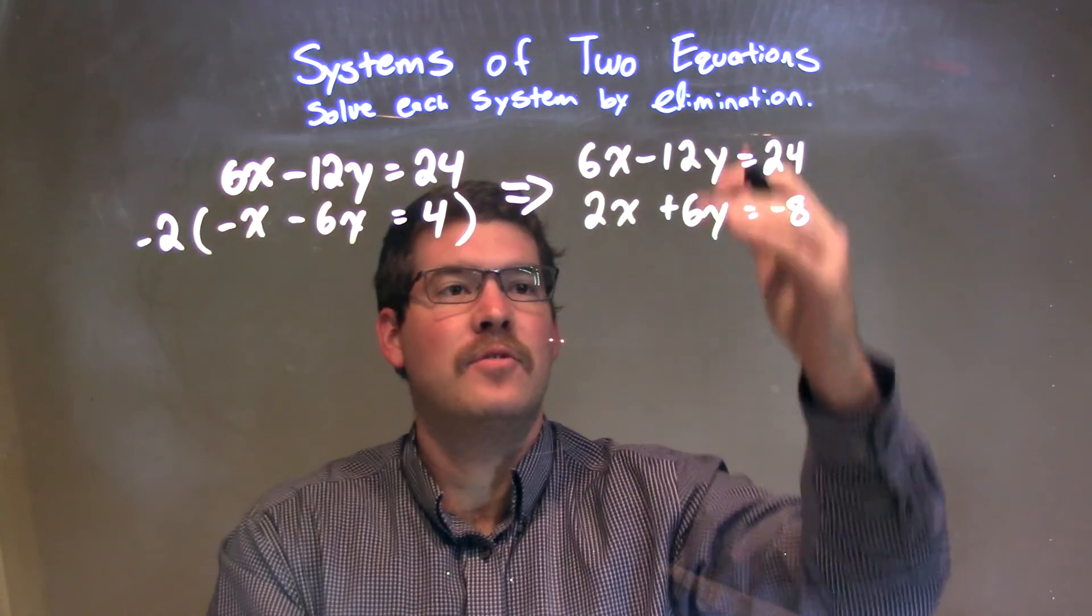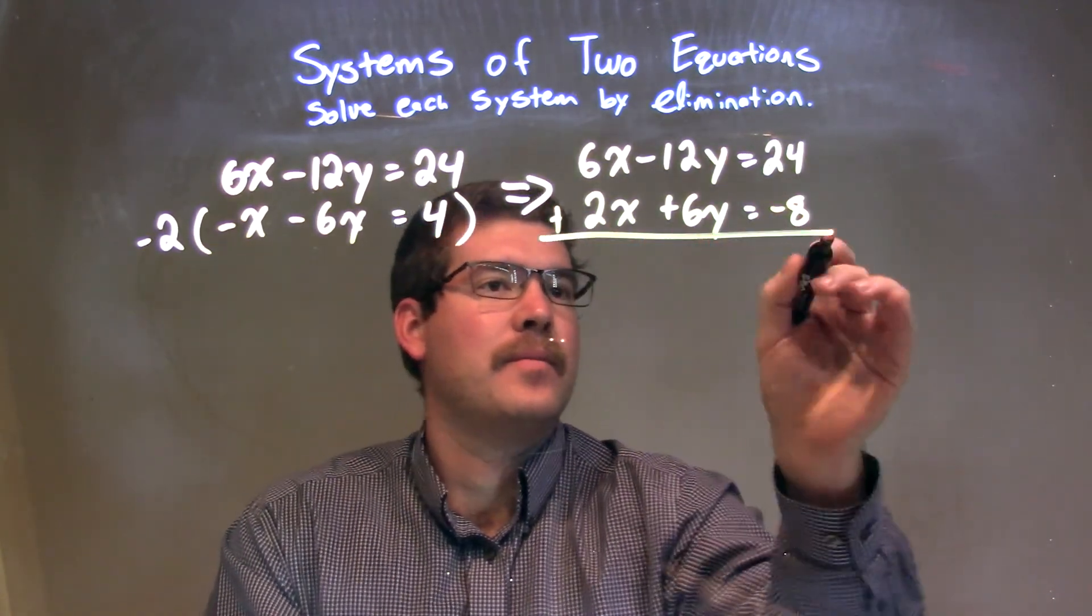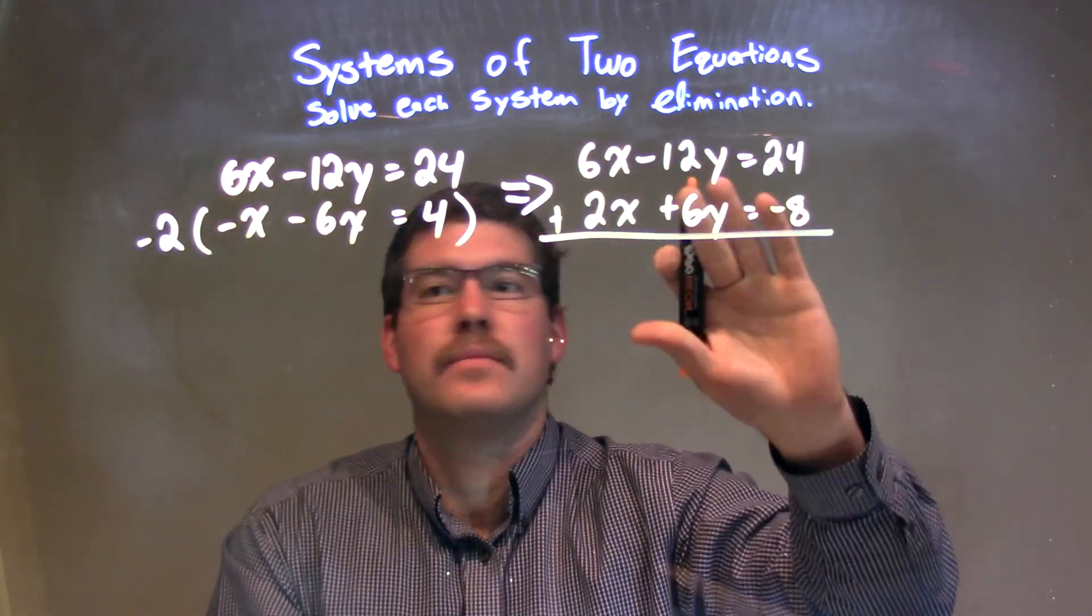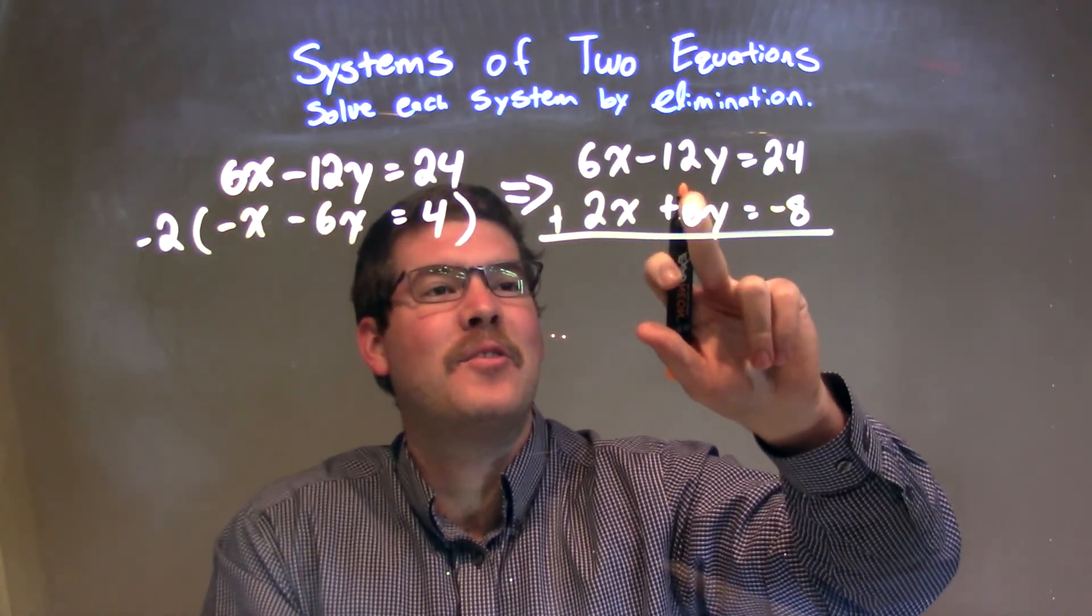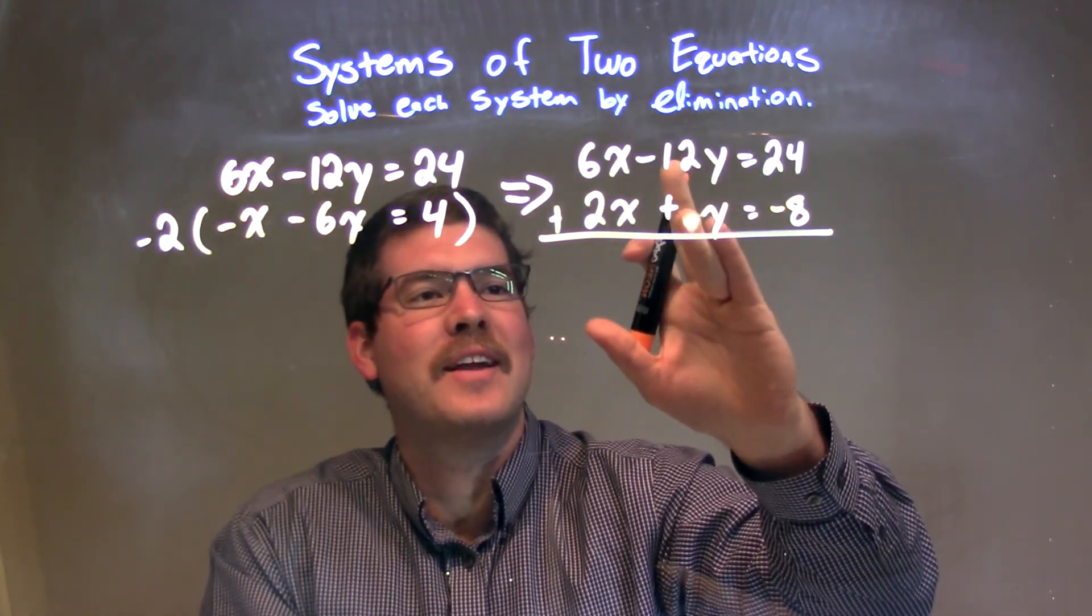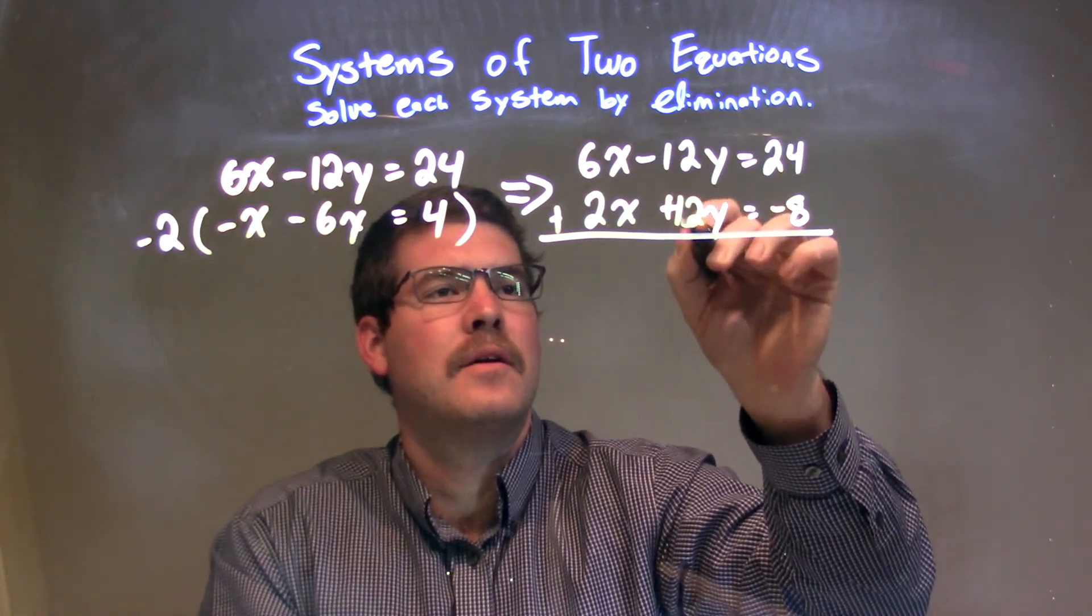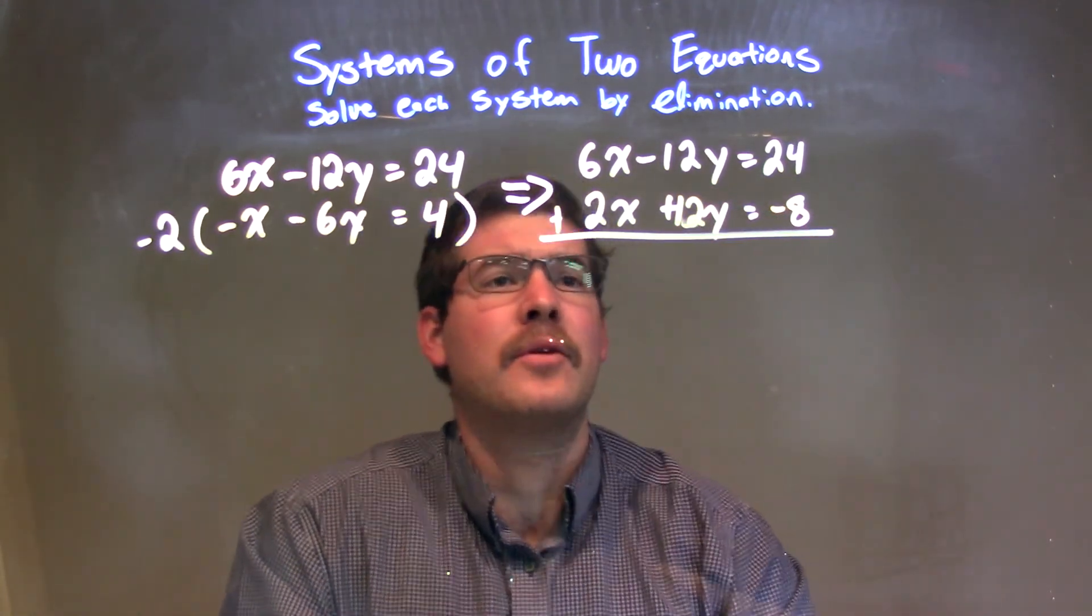From there, I'm going to add these two equations. Let's bring them down here. Oh, negative 2 times negative 6y is a positive 12y. That was the whole point. It should eliminate. I did that on purpose to make it a learning opportunity.